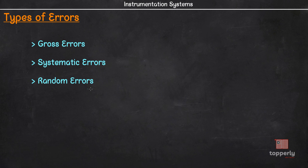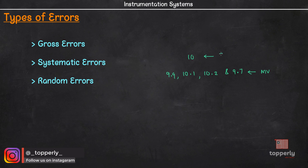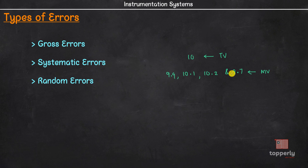For instance, say the true value of some quantity is 10 and the measured values are 9.9, 10.1, 10.2 and 9.7. Here you can see that the positive errors and the negative errors cancel out while we take the average and we get a central value which approximates the true value.